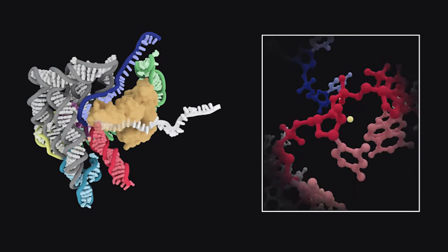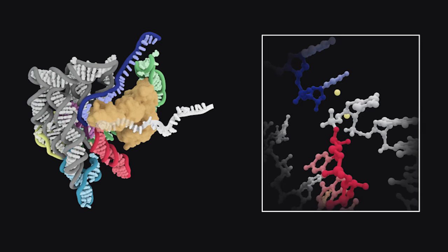The branch helix then undergoes a 90-degree swing to the vertical position. This moves the lariat away while bringing the 3' exon into the active site.